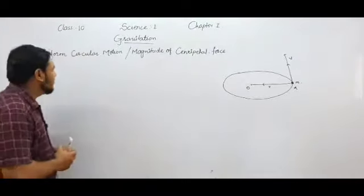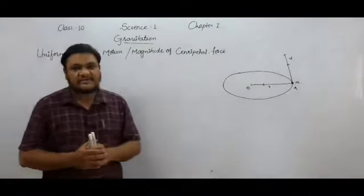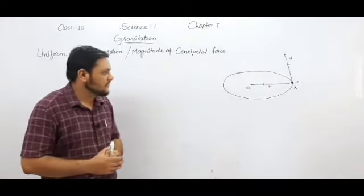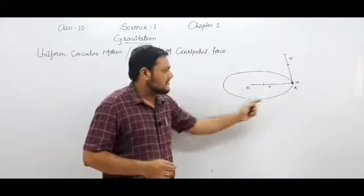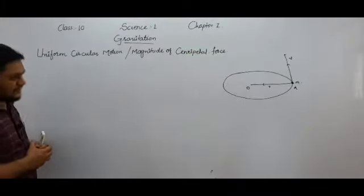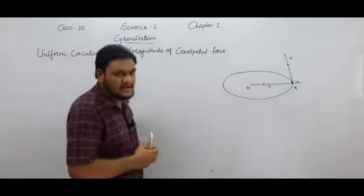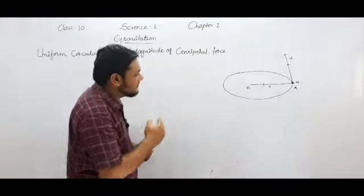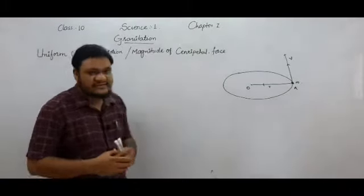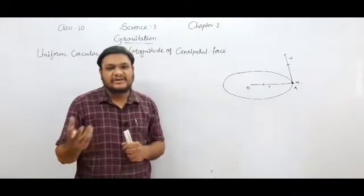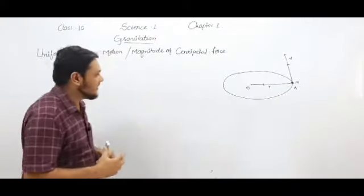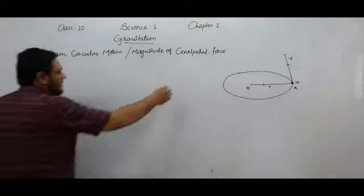Let's see what is uniform circular motion. We have studied the definition of circular motion in the previous lecture. The motion of an object along the circumference of a circle is called circular motion. We know that this motion is possible when the object is acted upon by a force directed towards the center, which is called centripetal force.